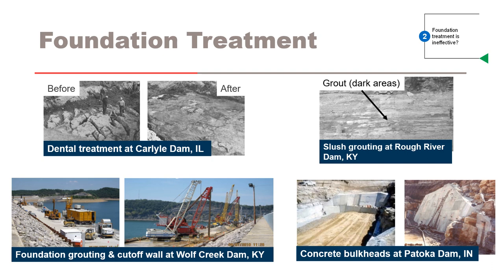Node 2 of the event tree evaluates the effectiveness of any foundation treatment. Effective foundation treatment isolates the embankment from the foundation and its open defects. Assess the effectiveness of dental concrete, foundation shaping, removal of fractured rock blocks and overhangs, air and hand cleaning, slush grouting, concrete bulkheads, filters at the embankment-foundation interface, and seepage barrier and cutoff elements. Be wary of reliance on grouting to serve as the sole design feature to control seepage. Consider information in the foundation report, construction photos, geologic mapping, as-built drawings, performance, and instrumentation.